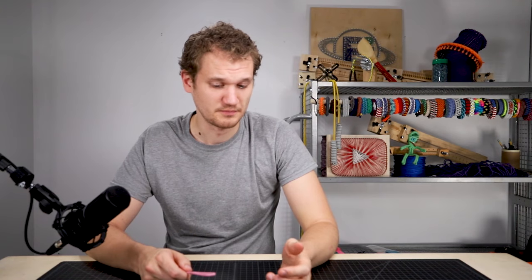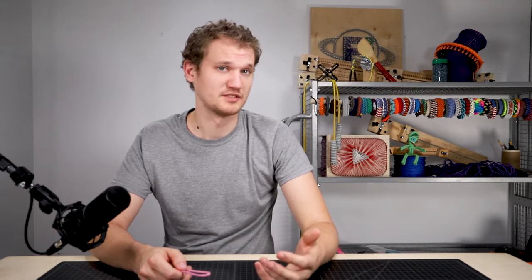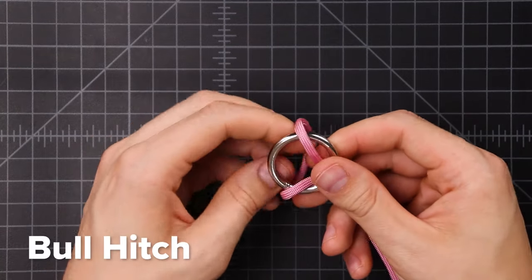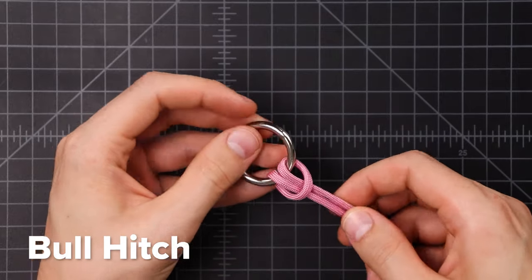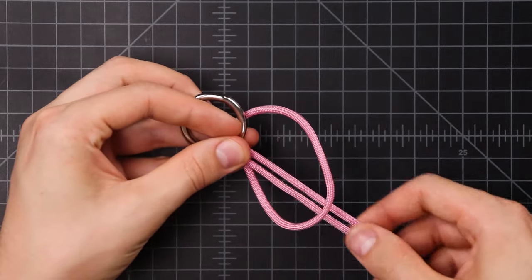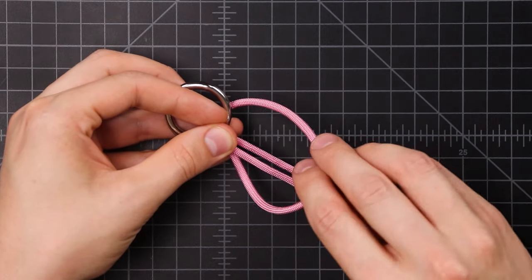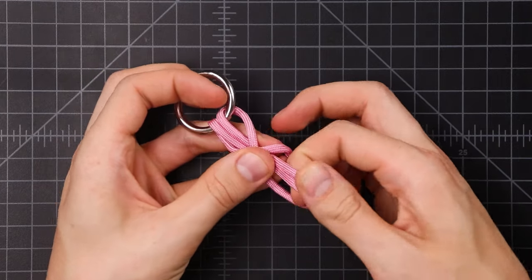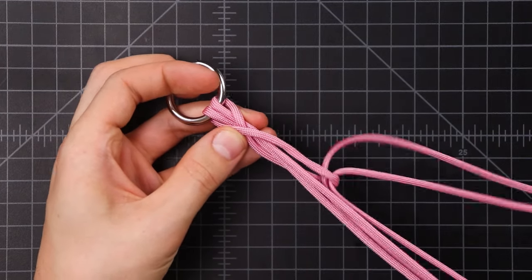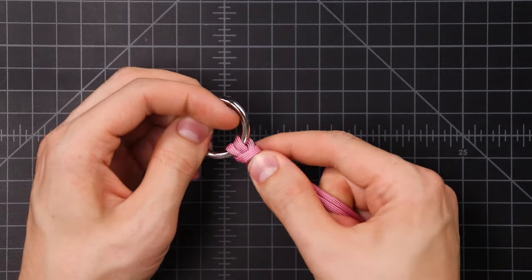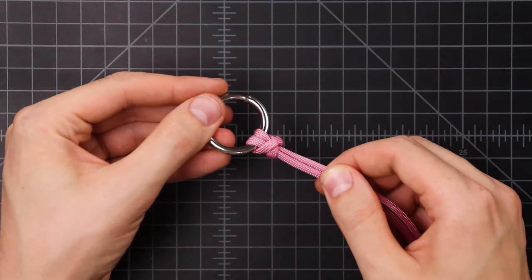Next is the bull hitch, and this one's very simple, it just adds one more step to the cow hitch. Start by making the cow hitch, then take that loop, add a twist, and pull your extra cord up through that loop. Tighten it down, and you have yourself a simple bull hitch.